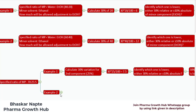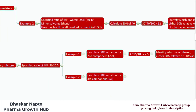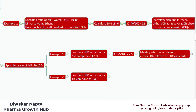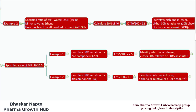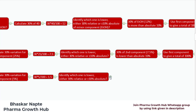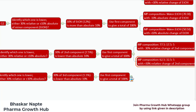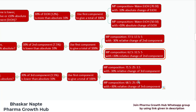Let us talk about example number 2, where I am going to change the third component. Calculate the 30% variation for the third component, which is 5% in the given example. The 30% of 5 becomes 1.5. Identify which one is lower — the 30% of this third compound is 1.5%, which is much lower than 10%. So I am going to use the 30% variation. Use the first component to give a total of 100%, and these are the allowable variations.